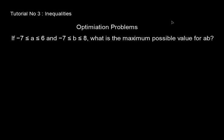What comes to your mind? The greater limit of a is 6 and the greater limit of b is 8, so the maximum of ab is 6 times 8, which is 48, right? Well, the answer is no.